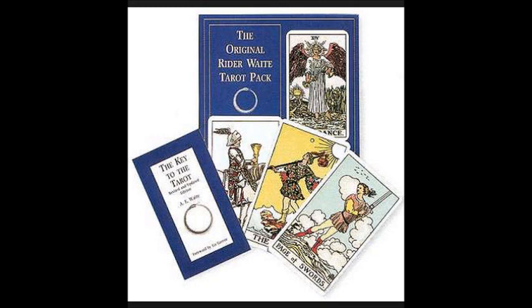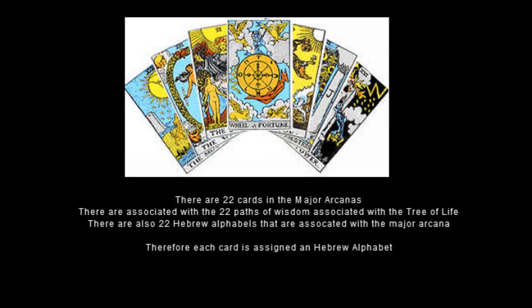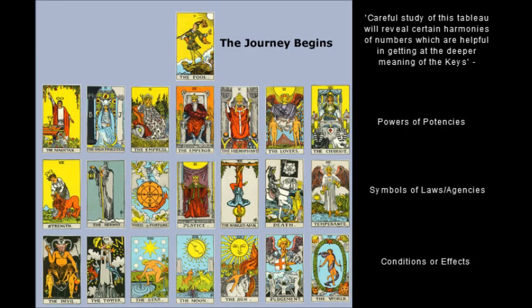When you divide the minor and major arcanas, the major cards have 22 cards associated with the 22 paths of the Tree of Life. In conjunction with that, there are 22 Hebrew alphabets associated with the major arcanas — each card is assigned to a Hebrew alphabet. Each of those 22 archetypes represents something we need to develop within ourselves to reach our fullest development and reunite all of our seven bodies into our highest wisdom.